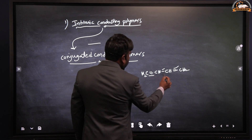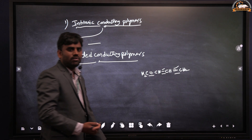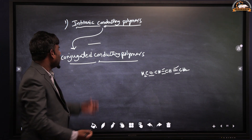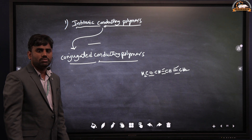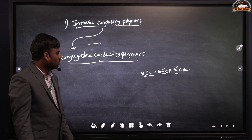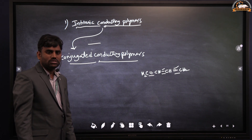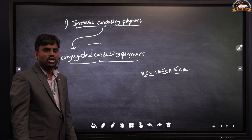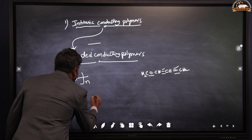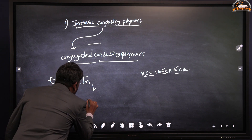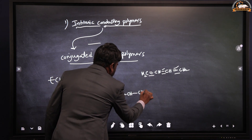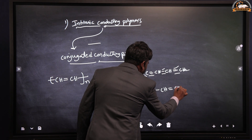With the help of the conjugation property, polymers exhibit conductance and are known as conjugated conducting polymers. I am going to explain with the example of polyacetylene. Writing this polymer in elongated form: CH double bond CH, single bond, CH double bond CH, single bond, CH double bond CH. This is the arrangement of the polyacetylene molecule.